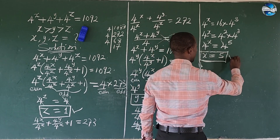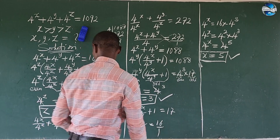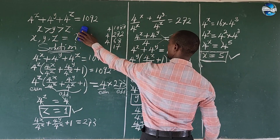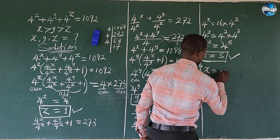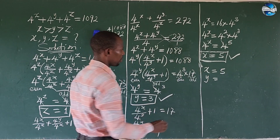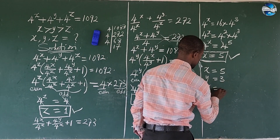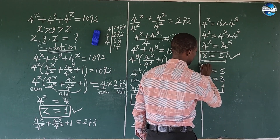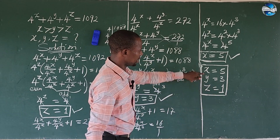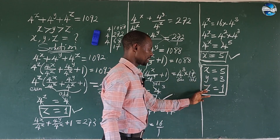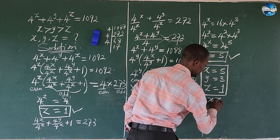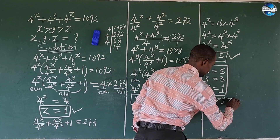So we succeeded in finding x, y, and z. Let's bring out the values: x equals 5, y equals 3, and z equals 1. If you check these answers, you'll discover that x is greater than y, greater than z — it therefore satisfies the given condition.